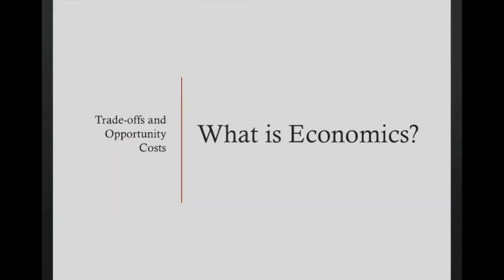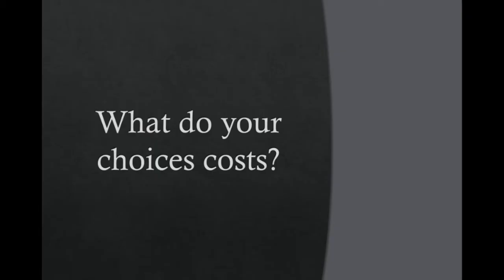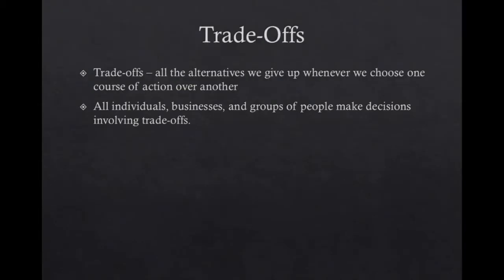Today we're going to look at the second part of defining economics, and that is decisions — what do your choices cost you? There's a cost to every decision that you make; there's always something you have to give up. In economics, there are specific terms for those things that you give up. The first is trade-offs: everything that you're going to give up when you choose one action over another.